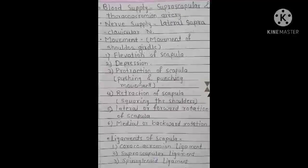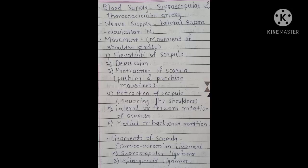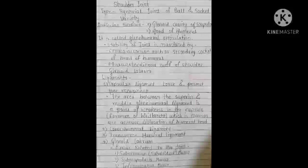Movements at the acromioclavicular joint are movements of the shoulder girdle: elevation of the scapula, depression, protraction of the scapula (pushing and punching movement), retraction (squaring the shoulder), lateral or forward rotation, and medial or backward rotation. Ligaments of the scapula include the coracoacromial ligament, suprascapular ligament, and spinoglenoid ligament.